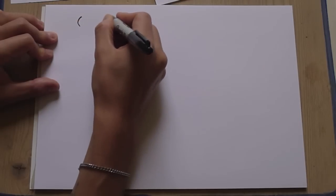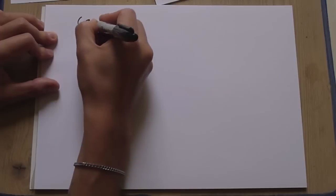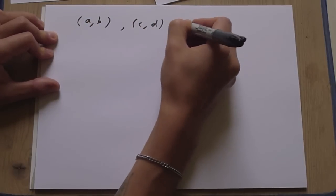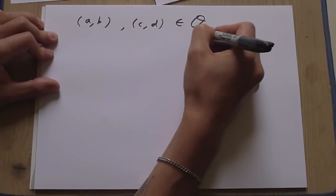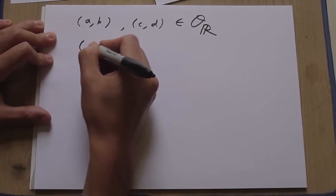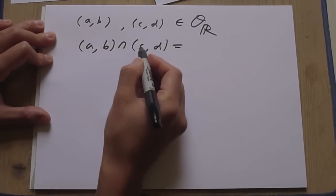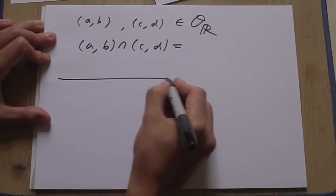So let's check the first one. Let's take two open intervals. A, B, C, D. Two open intervals. These are both open sets in R. If you take the intersection of A, B, intersection C, D. If C is greater than B, well, okay, let's draw it.